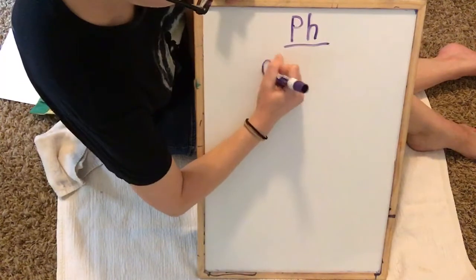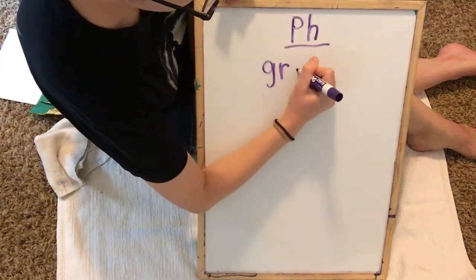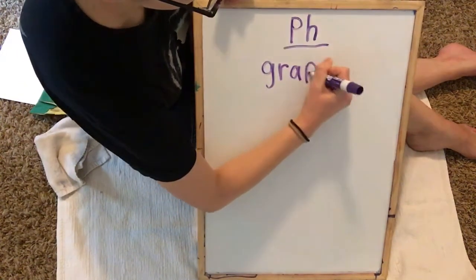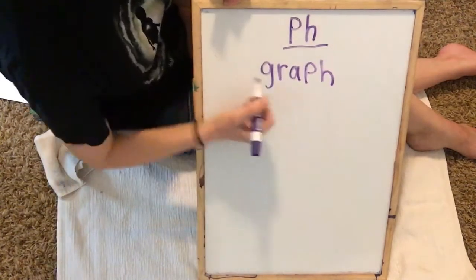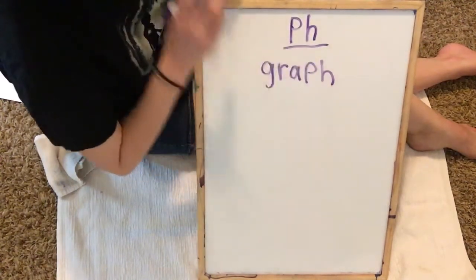First word. Graph. G, R, A, F. G, R, A, P, H. Graph.